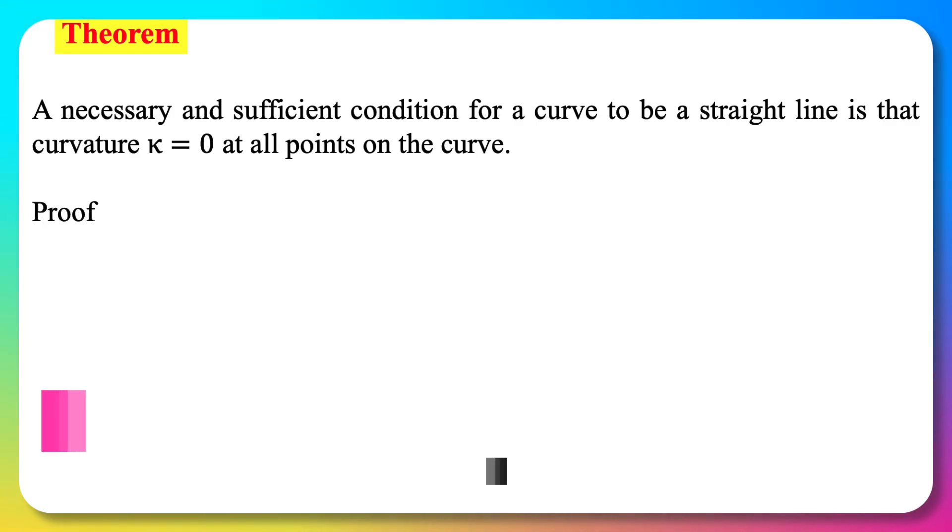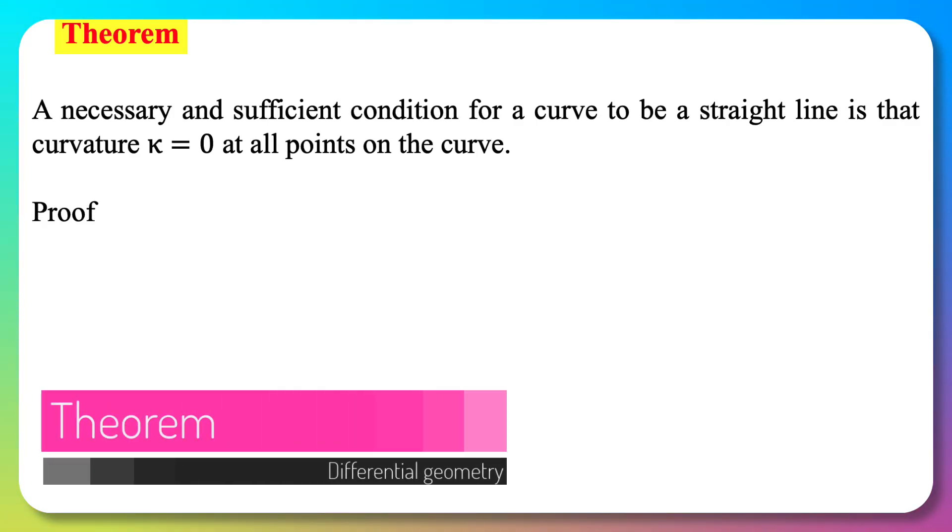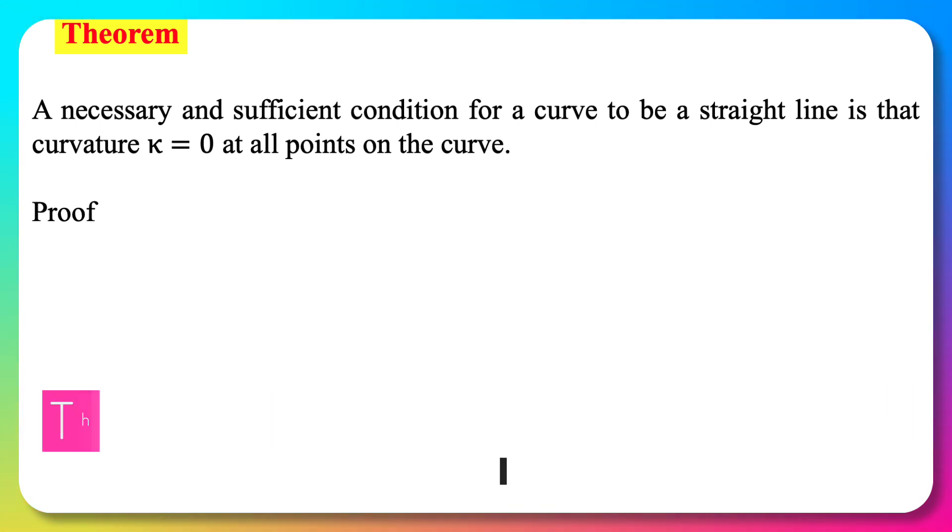A necessary and sufficient condition for a curve to be a straight line is that the curvature kappa equals zero at all points on the curve.